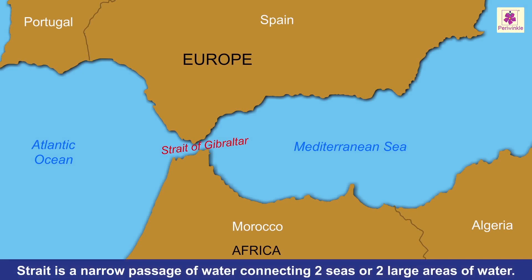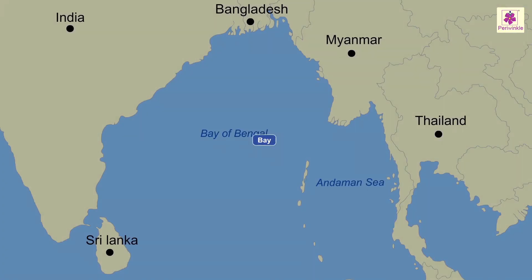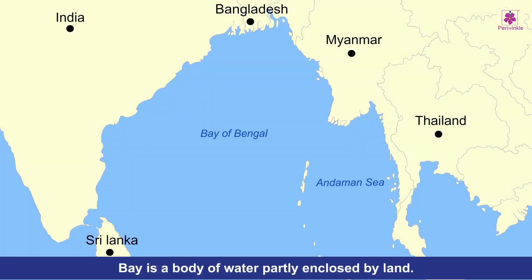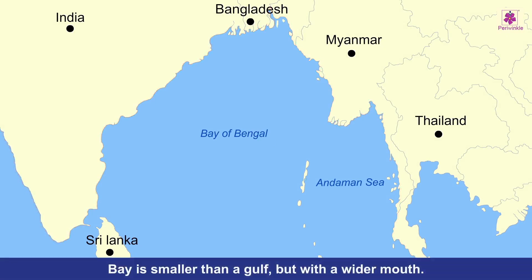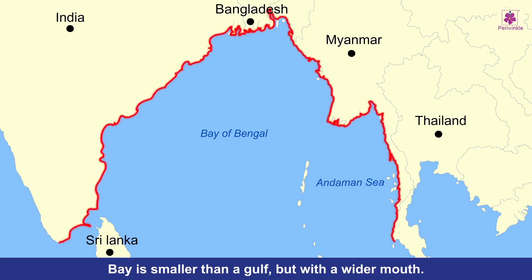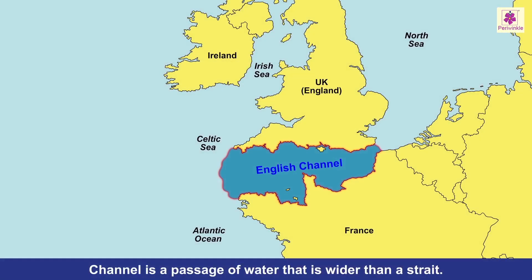A strait is a narrow passage of water connecting two seas or two large areas of water, like two large lakes or a lake and a sea. A bay is a body of water partly enclosed by land. It is smaller than a gulf but with a wider mouth. A channel is a passage of water that is wider than a strait.